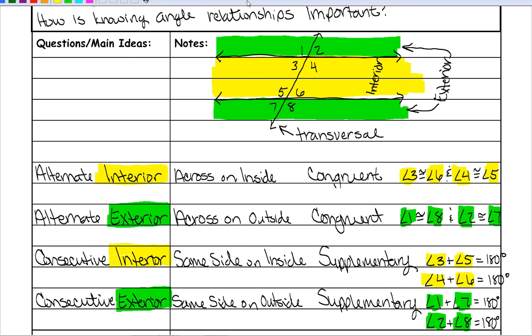Since corresponding angles are on the same side and they skip, one will be on the outside and one will be on the inside for each pair — and that applies to all of the pairs.